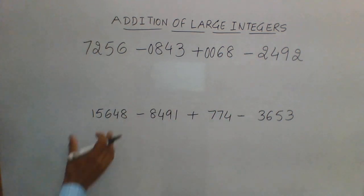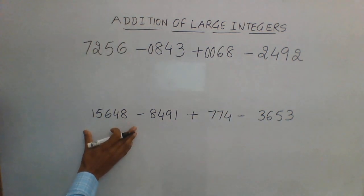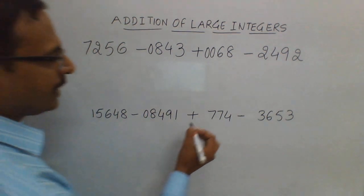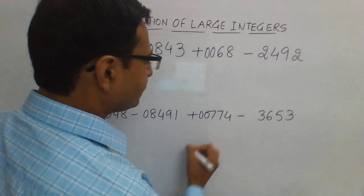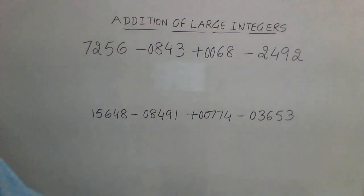Likewise in this question you can see 5, 4, 3, 4, so 5 are the maximum number of digits. Prefix a 0 here, then double 0 here, a single 0 here. Now every number has 5 digits.